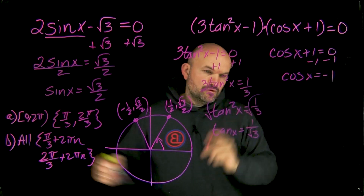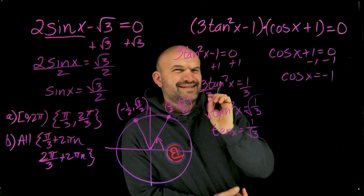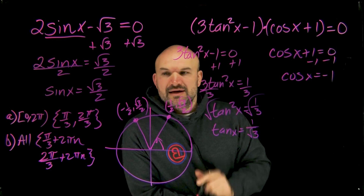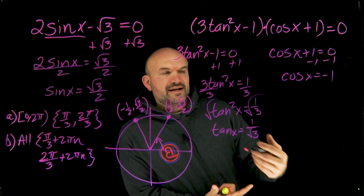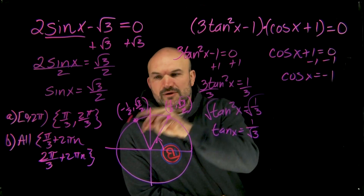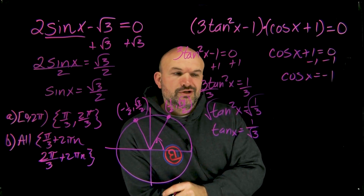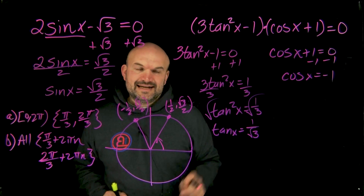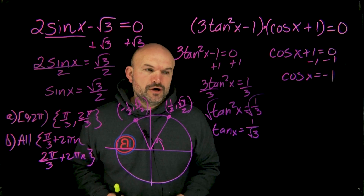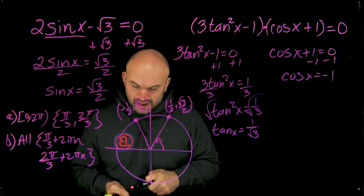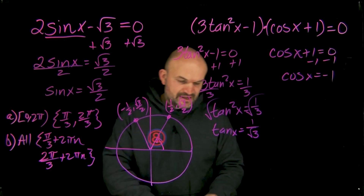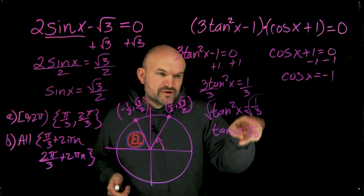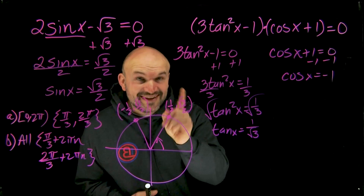In this case we have one over the square root of three, and this is where a lot of students get confused. Sine is the y-coordinate and cosine is the x-coordinate when dealing with the unit circle — that's easy. But tangent is y over x, and I don't recognize one over the square root of three directly. So I might need to rationalize the denominator — and if you were thinking that, you are correct.